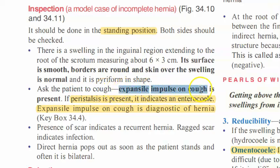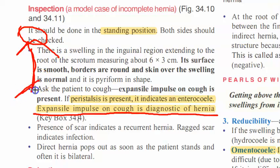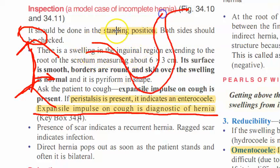If there is an expansile impulse on cough, it is a diagnostic feature of hernia. You check the person in standing position, ask them to cough, and look for expansile impulse on cough — this is diagnostic of hernia. If there is visible peristalsis, it will indicate an enterocele, because bowel is present inside the hernia sac.